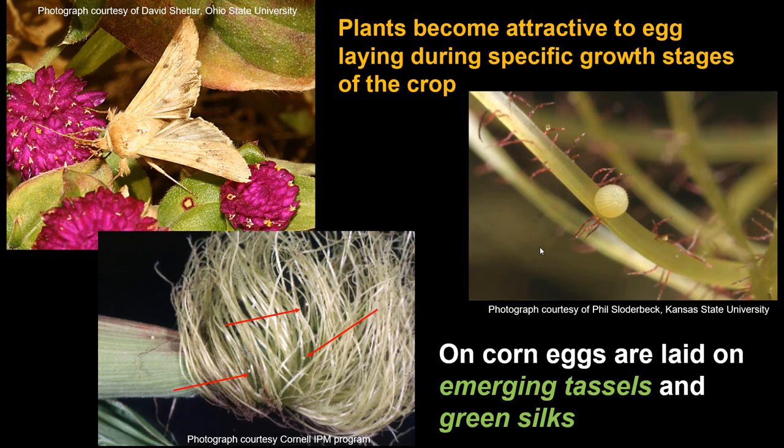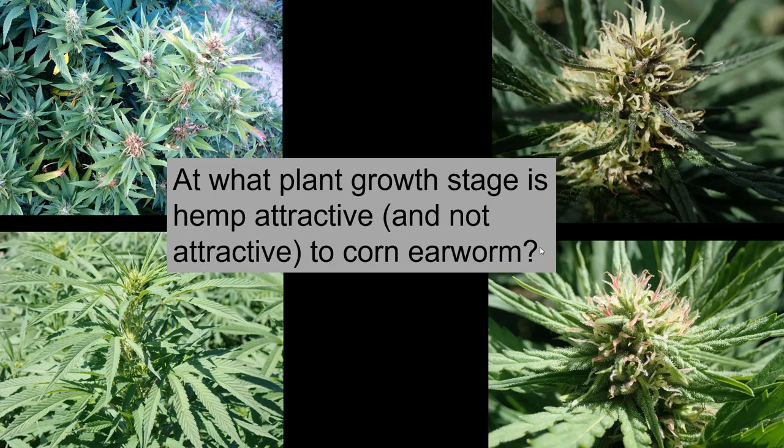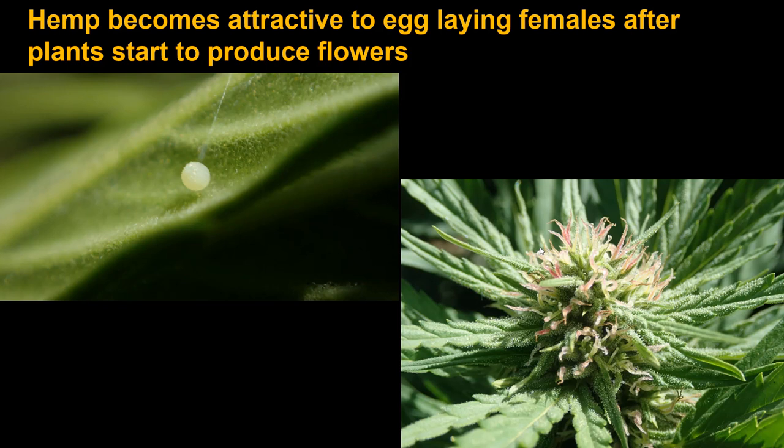Plants become attractive to egg-laying females during specific growth stages. This has been best studied on corn — corn is not attractive before it produces tassels. When the tassels emerge and there are green silks, eggs are laid on the plant. After the tassels and silks brown, the insect no longer lays eggs on corn. In hemp, we don't really know what the most attractive stage is yet, but it sure looks like it is when it's flowering. We don't see eggs or damage before flowers start to appear. The eggs may be laid near the flower buds or on a leaf near the buds.